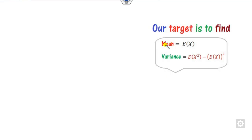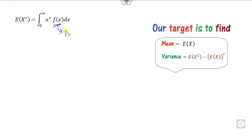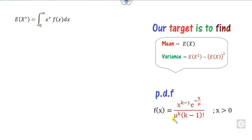Our target of this lecture is to find the mean and variance. In order to find that, our target is to find E[X] and E[X²]. To make the calculation simple, I will start with the general E[X^R]. By the definition of the mean, F(X) is the probability density function, and I consider the PDF in terms of mu.